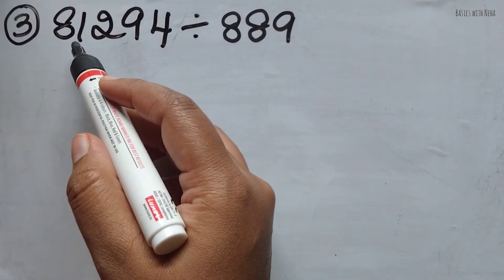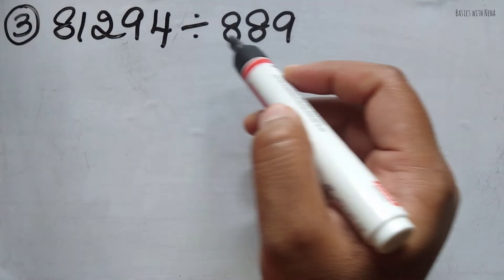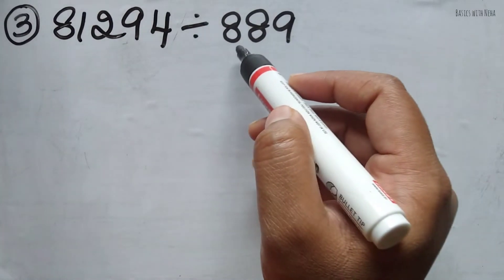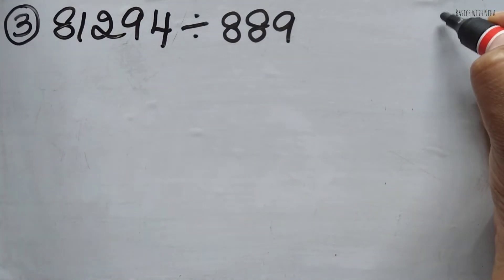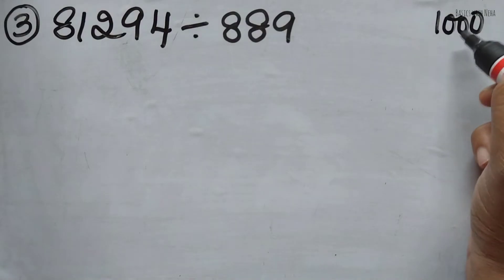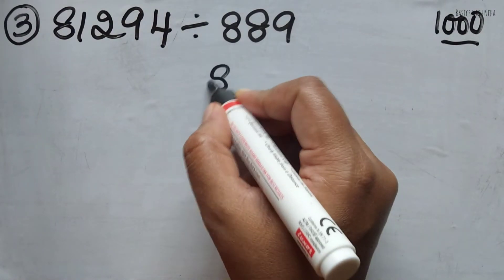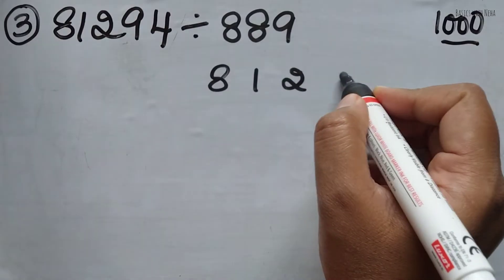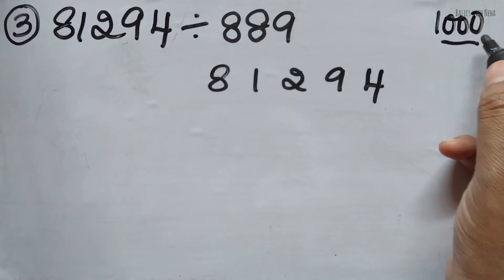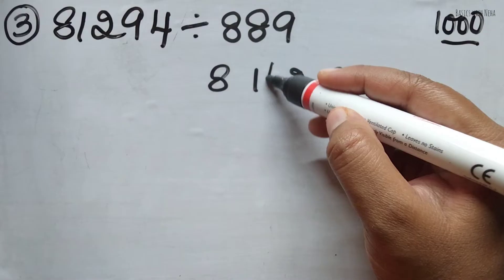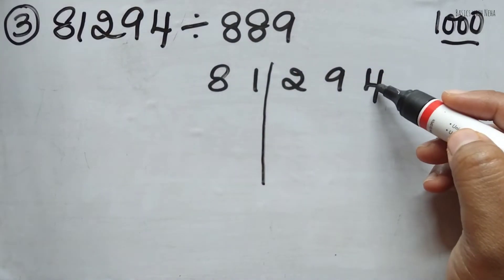The third question, 81,294 divided by 889. So here for 889, I can take 1000 as the base. 1000 has 3 zeros. So let me just write this 8, 1, 2, 9, 4, 3 zeros. So I'm going to split it after 3 numbers from right side.